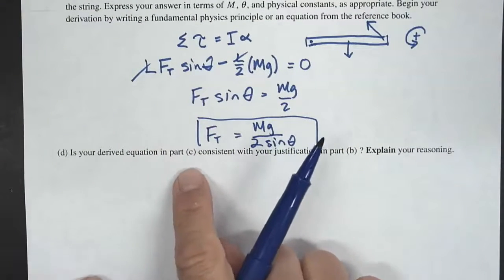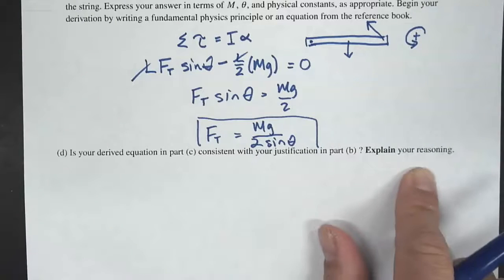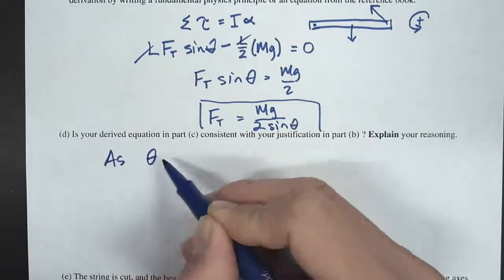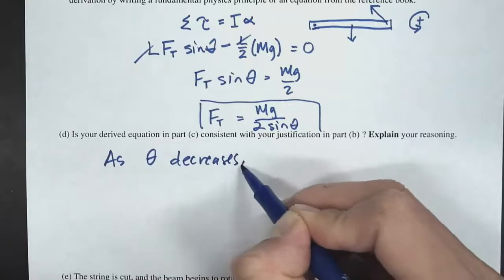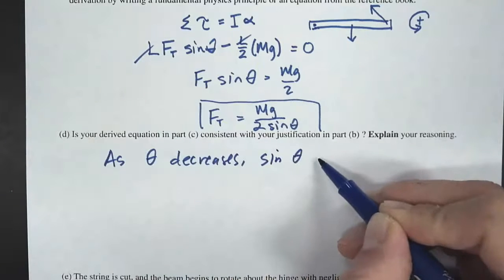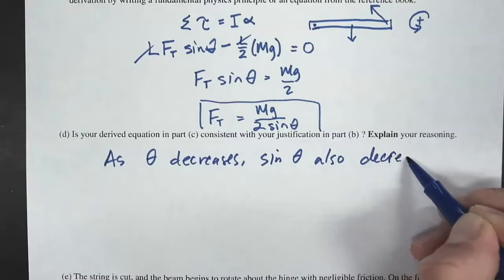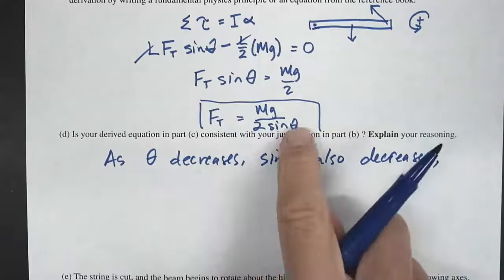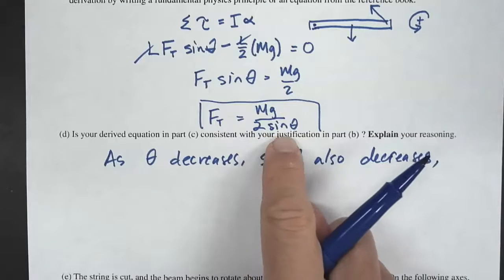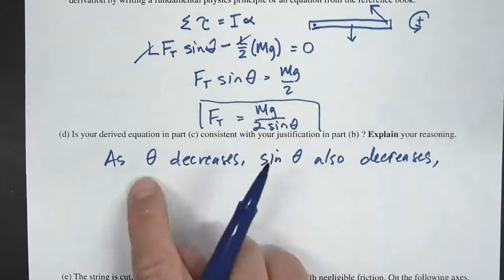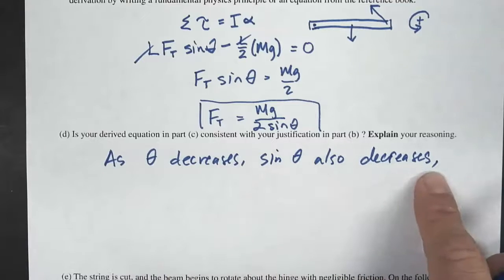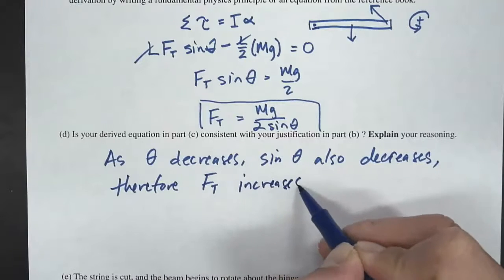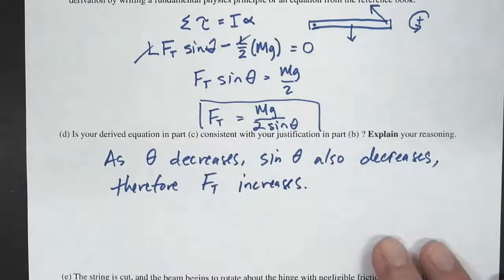Part D: Is the derived equation in Part C consistent with the justification in Part B? Yes — if theta decreases, sine theta also decreases, and that is true for angles between 0 and 90 degrees. Since sine theta is inversely related to FT in the equation FT equals mg over 2 sine theta, as sine theta decreases, FT must increase. This is consistent with our earlier reasoning.